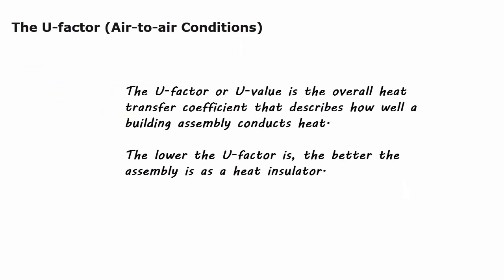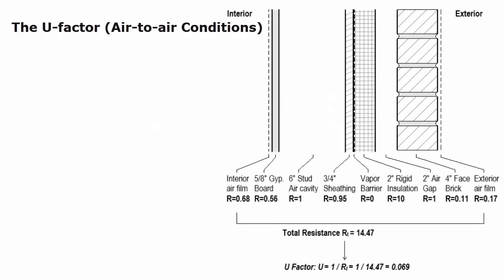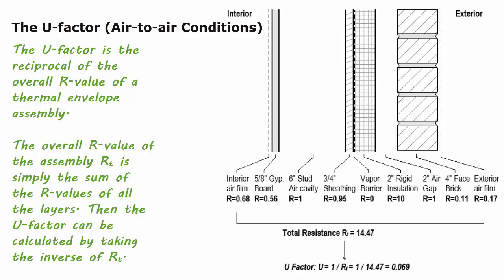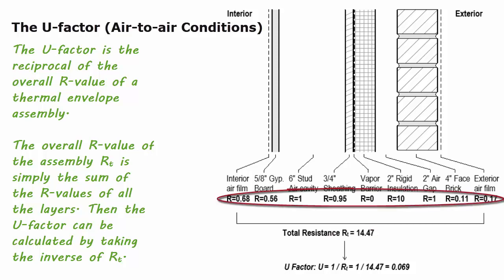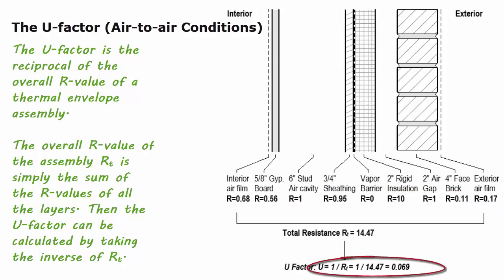The U-factor or U-value is the overall heat transfer coefficient that describes how well a building assembly conducts heat. The lower the U-factor, the better the assembly is as a heat insulator. The U-factor is the reciprocal of the overall R-value of a thermal envelope. The overall R-value of the assembly RT is simply the sum of the R-values of all the layers, and then the U-factor can be calculated by taking the inverse of RT.